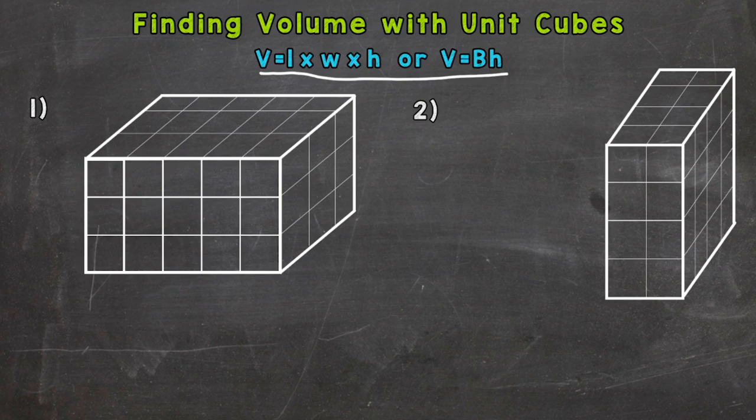So let's jump right into number one here, where we have a rectangular prism filled with the unit cubes. So the first thing we need to do, there's a couple different strategies. Let's use the base times height formula first. So I'm going to write my formula, volume equals base, the area of the base, times the height.